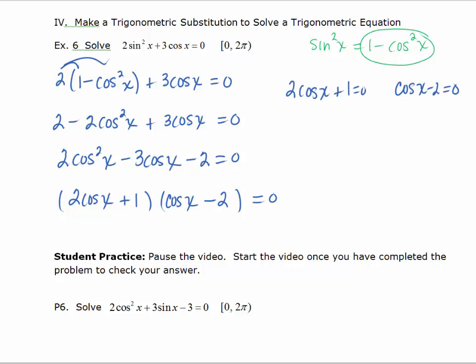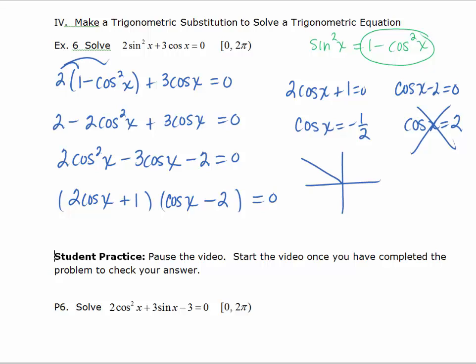We'll set each of these factors equal to 0 and solve. Looking at the right equation, we have cosine x equals 2. We know the range for cosine — all output values — must be within negative 1 to 1. So 2 is not in the range for cosine, meaning there's no solution from that factor. We'll focus on cosine x equals negative 1 half. Cosine is negative in the second and third quadrants. The reference angle for which cosine equals 1 half is pi over 3, giving us solutions 2 pi over 3 and 4 pi over 3.